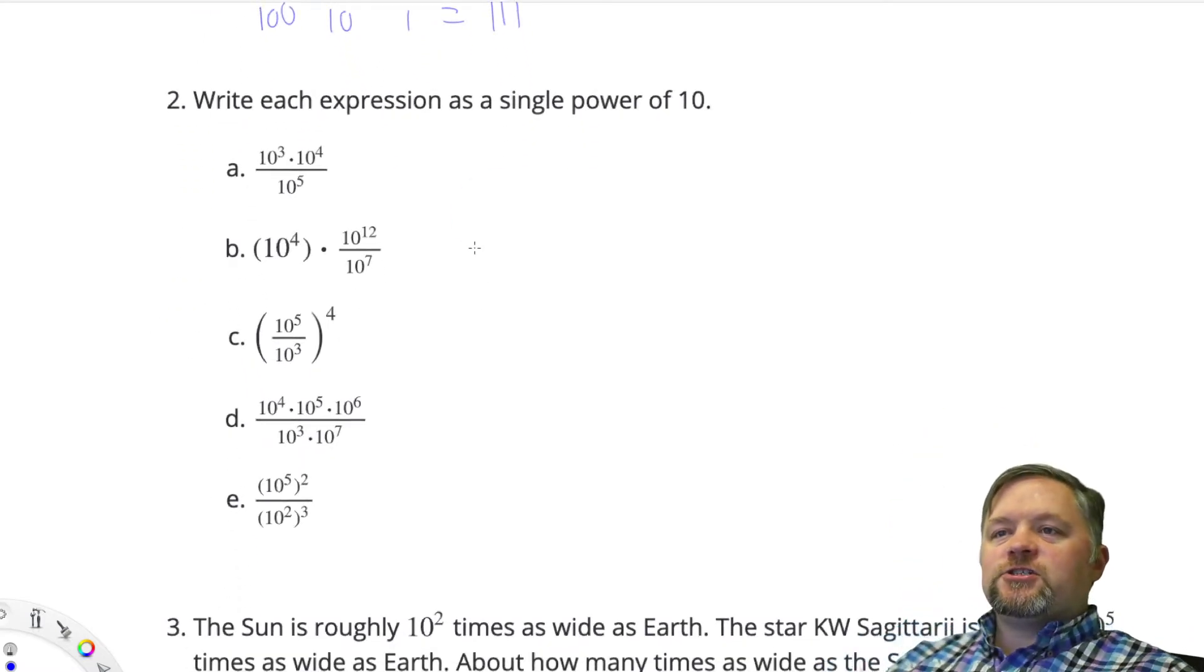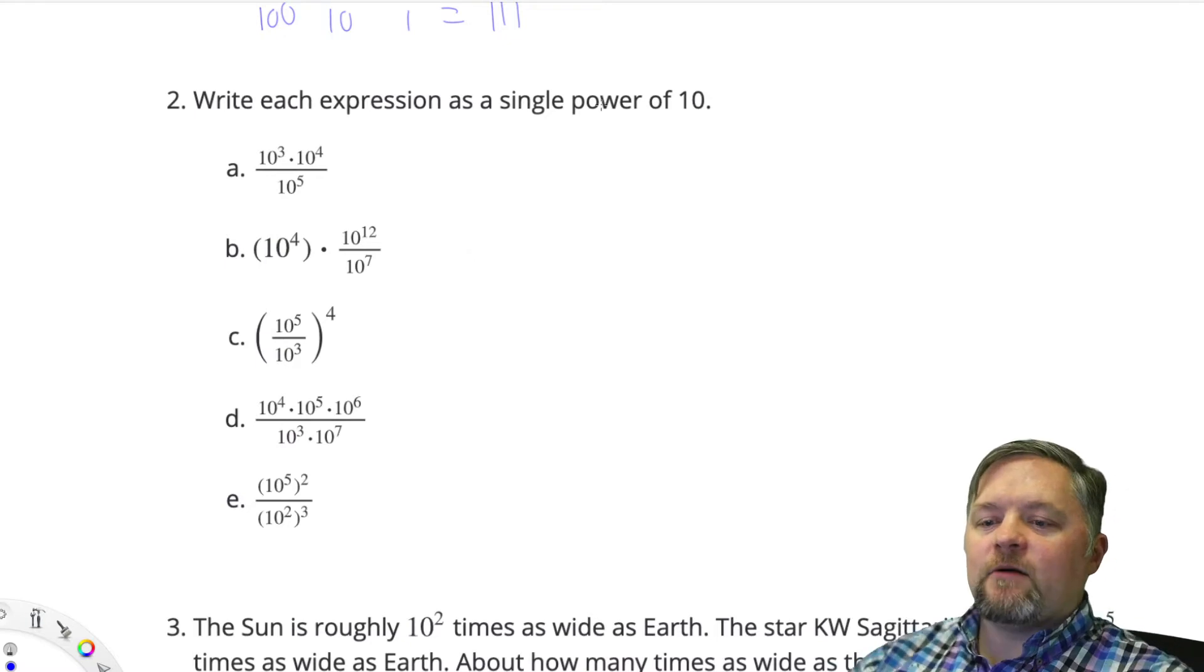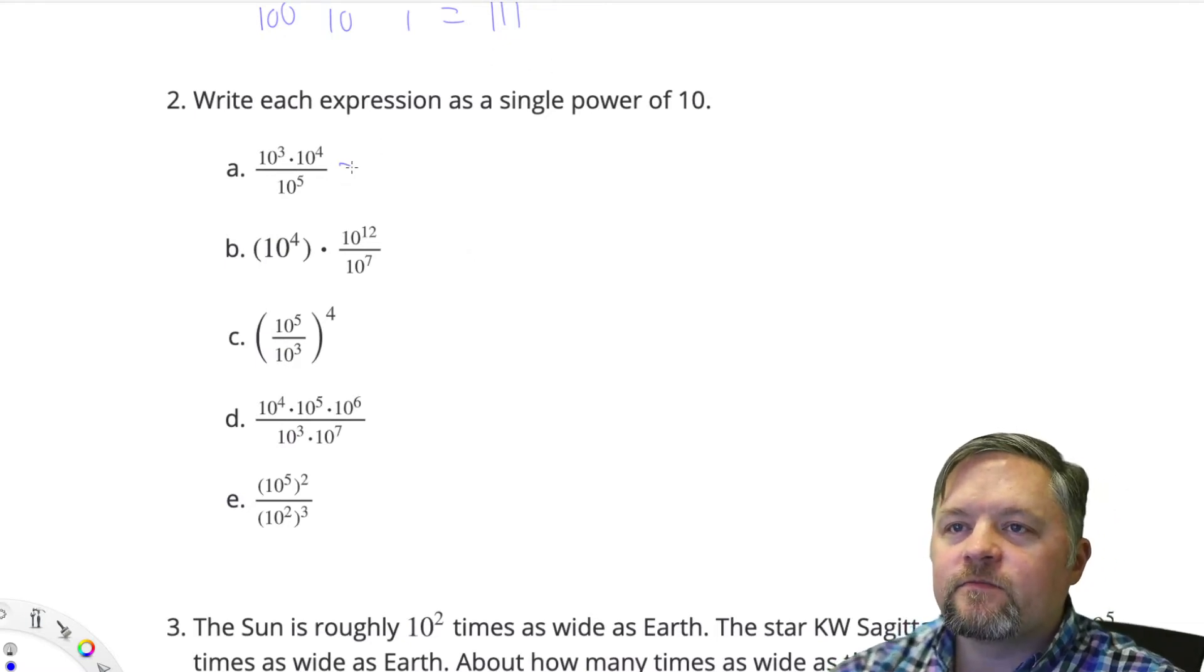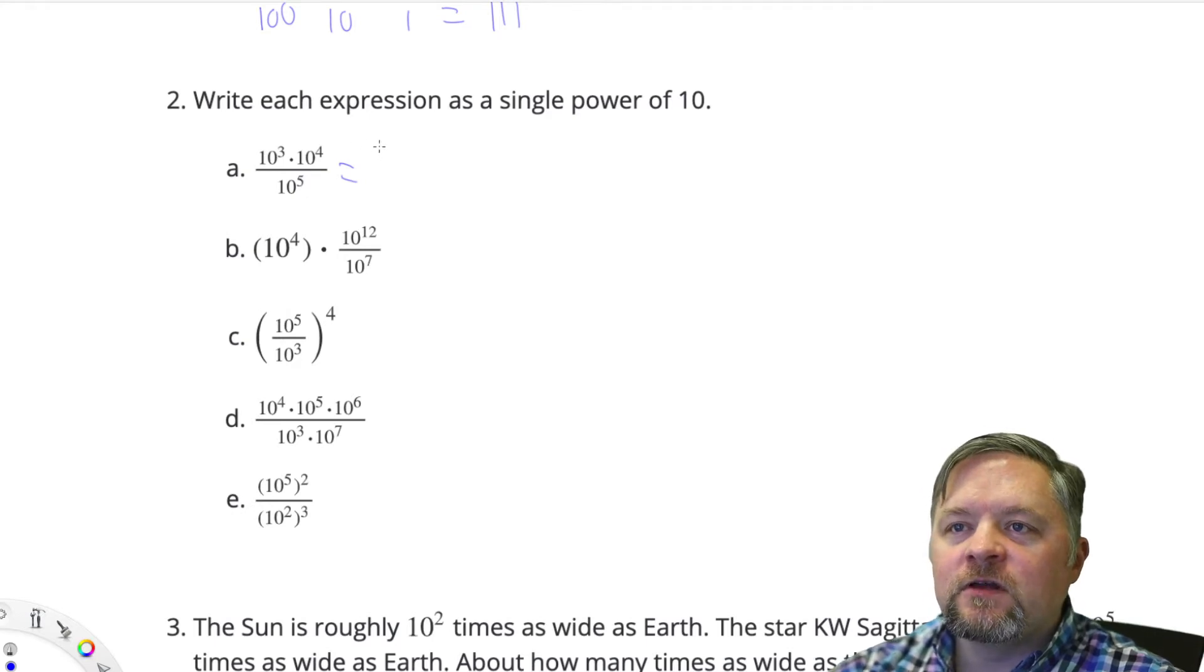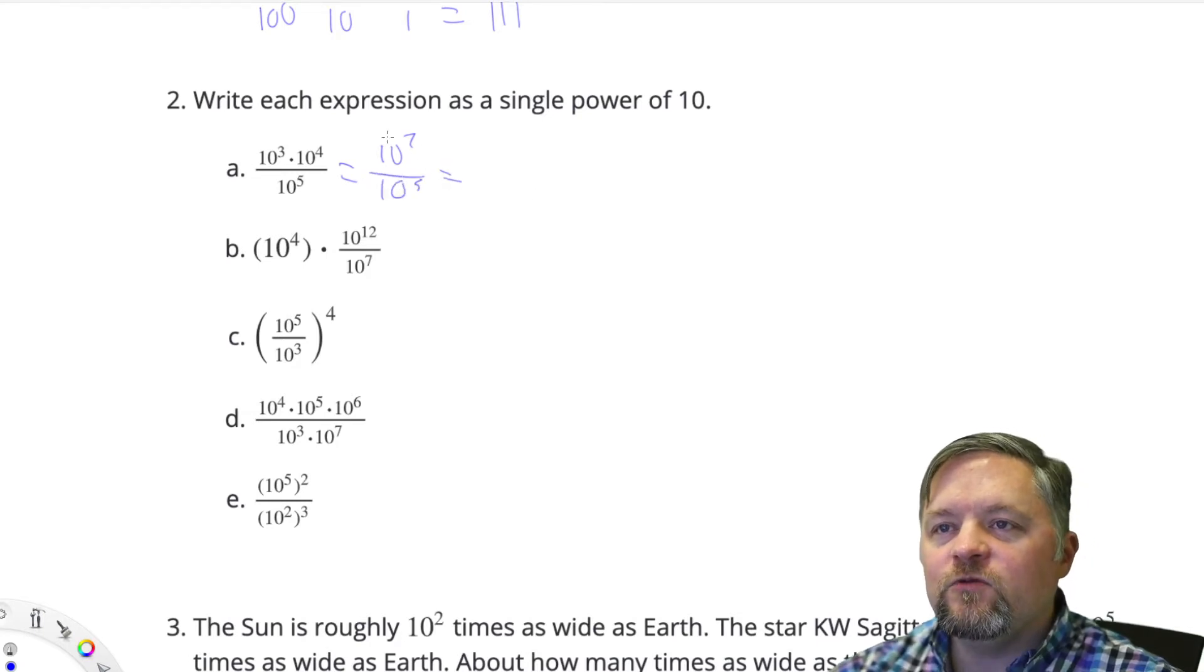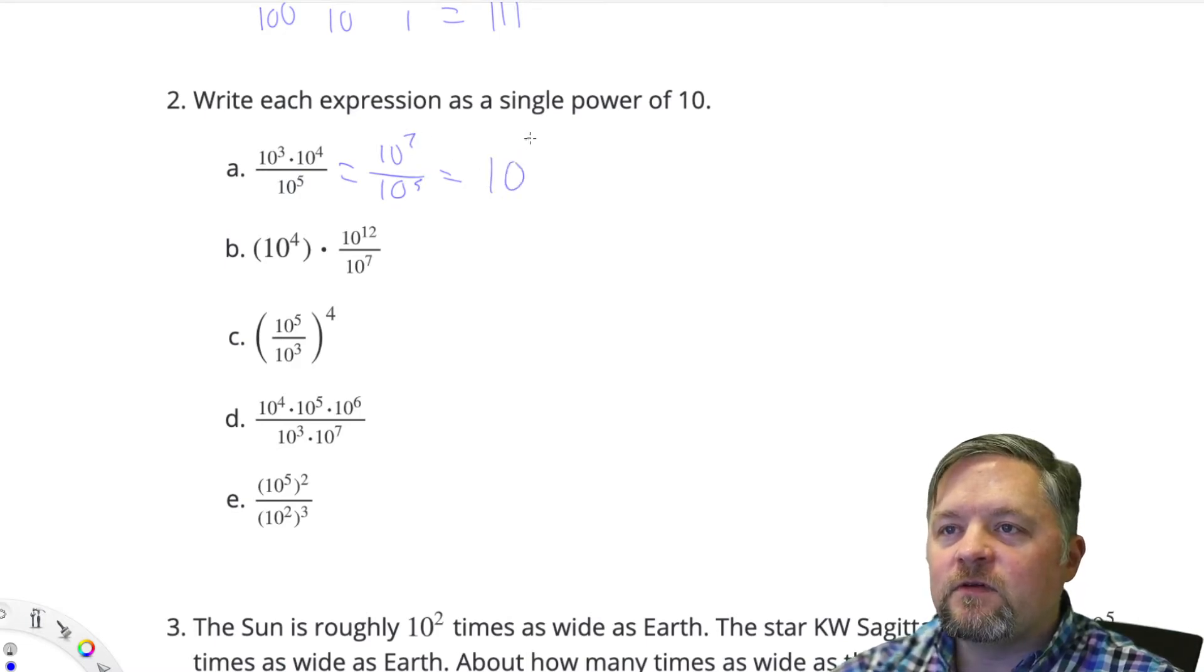Write each expression as a single power of 10. Okay. First thing I'm thinking is if we are multiplying, we can add the exponents. 10 to the 3 times 10 to the 4 is 10 to the 7 divided by 10 to the 5. Now we are subtracting exponents. 7 subtract 5 is 2.